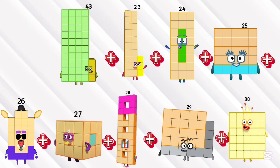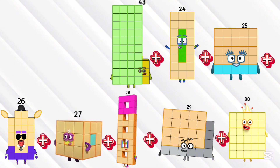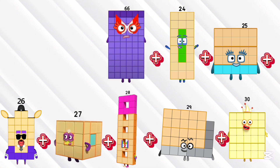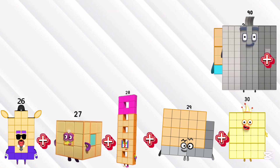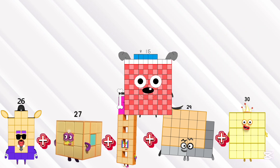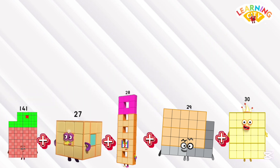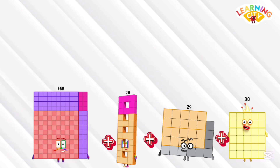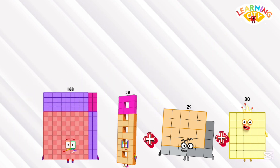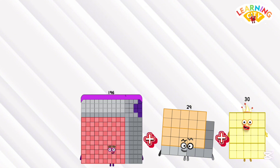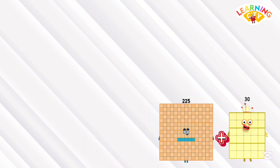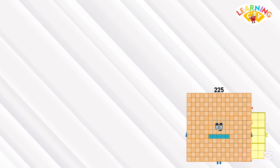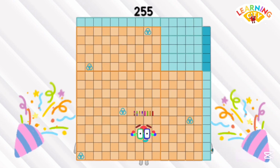43 plus 23 equals 66. 66 plus 24 equals 90. 90 plus 25 equals 115. 115 plus 26 equals 141. 141 plus 27 equals 168. 168 plus 28 equals 196. 196 plus 29 equals 225. And lastly, 225 plus 30 equals 255.